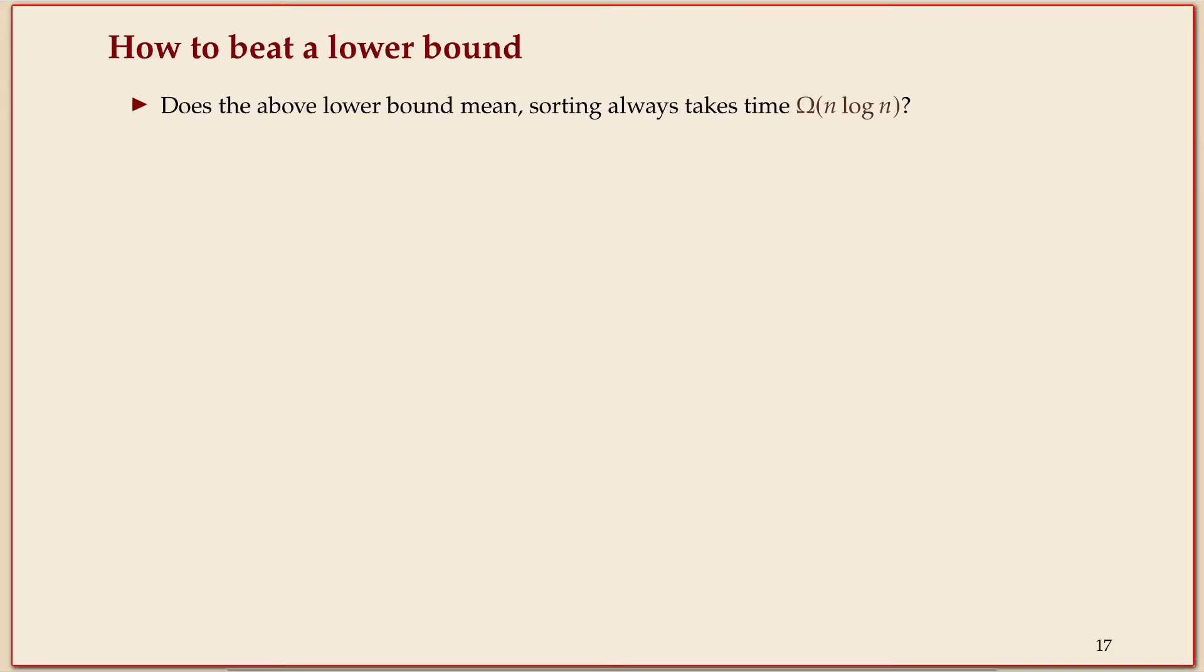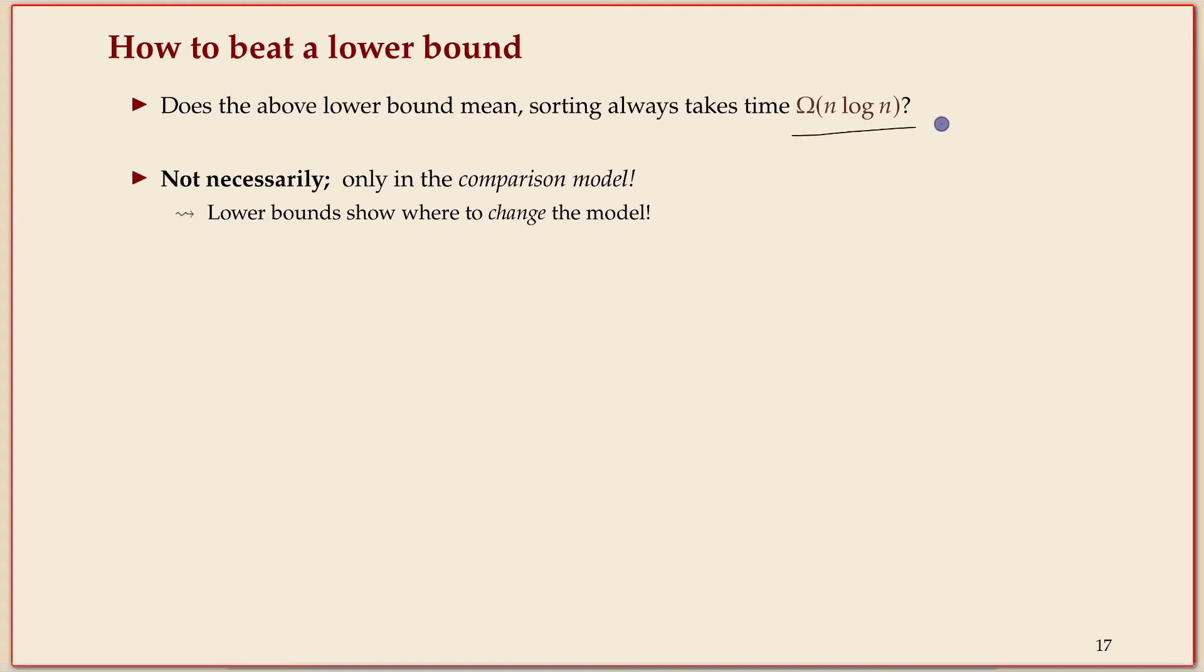So you can sometimes break lower bounds, but not in the sense that the mathematical statement would be wrong. It's in the sense that you have to step outside of the model. The statement really formally just says any comparison-based algorithm has to take time in Omega(n log n) because it has to spend at least n log n comparisons.